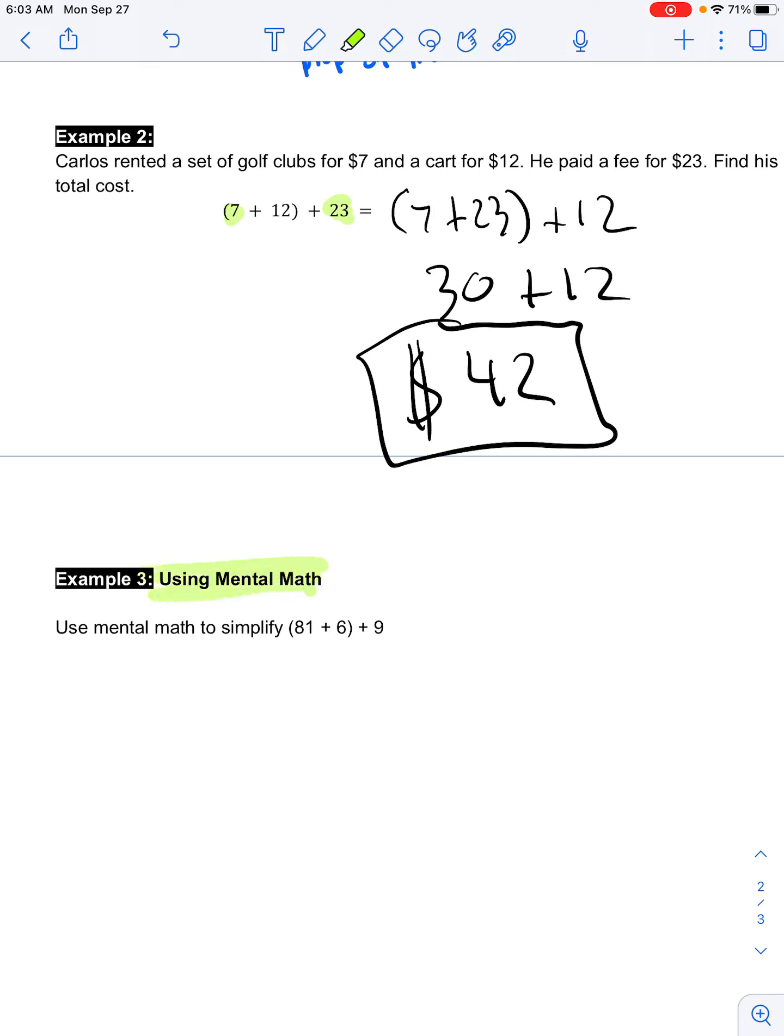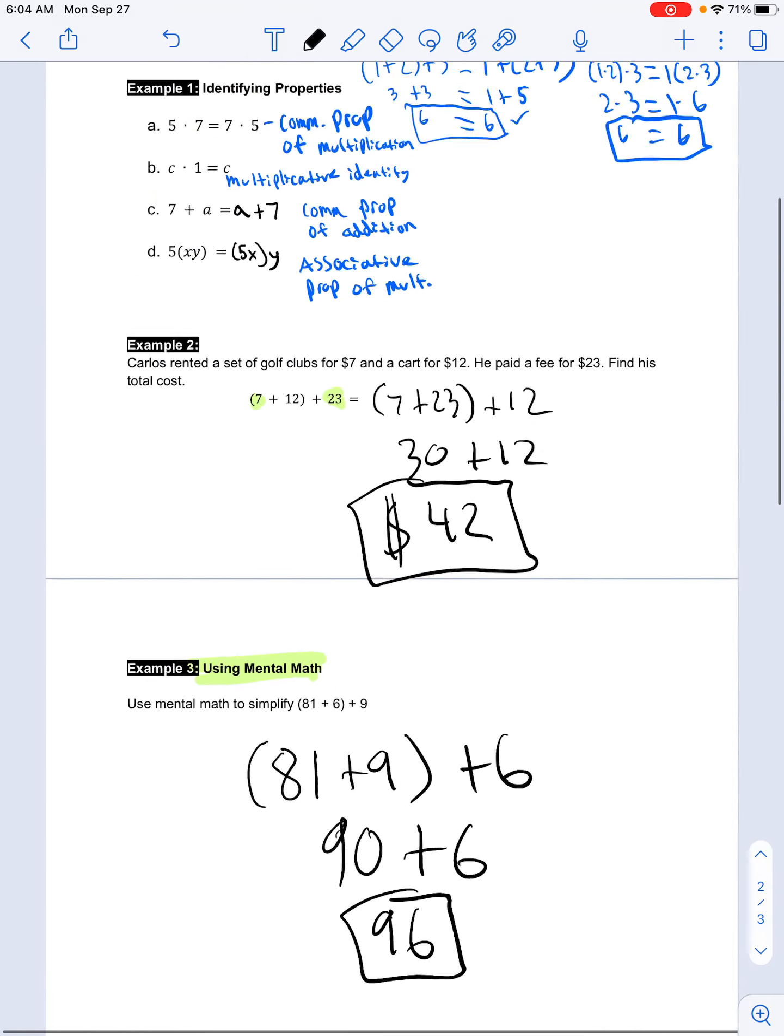You can see that right here using mental math. I could do eighty-one plus six and then add nine, but it would be way easier if I did eighty-one plus nine and then I added six at the end. Ninety plus six is ninety-six. So again, using these properties can help make our job easier.